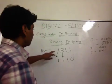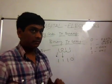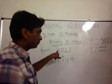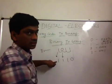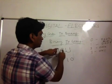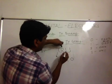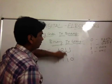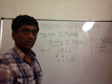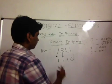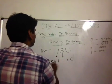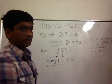So, to summarize: drop the first digit of the binary number, then add the first digit to the second and drop, add those two digits and drop, then add those two and drop. This is your gray code for the binary number 1011.